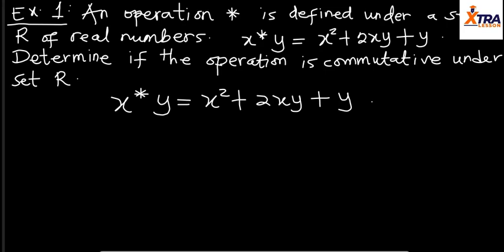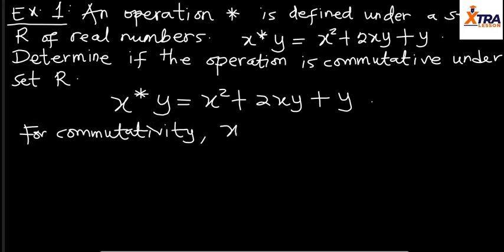We can use particular elements of set ℝ to test if this is commutative, but in other cases you might not need to do that, because you can actually deduce from just looking at the formula whether we'll have the same result. For commutativity, remember that x★y should be the same thing as y★x — even if their positions are reversed, they should still have the same value.